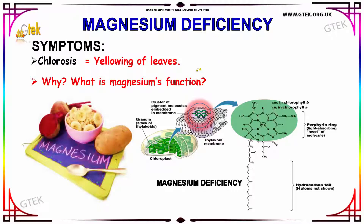Let us talk about magnesium deficiency. The symptoms of magnesium deficiency are chlorosis, that is the leaves becoming yellowish. Why are the leaves becoming yellowish? You can see here a cluster of pigment molecules embedded in the membrane — the granum, which is nothing but the stack of thylakoids, and here you can see the chlorophyll.